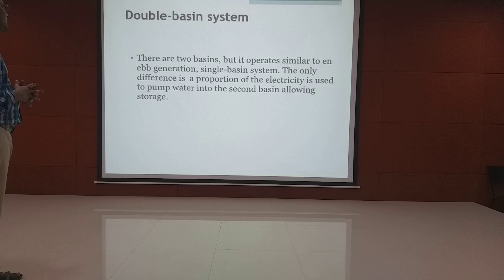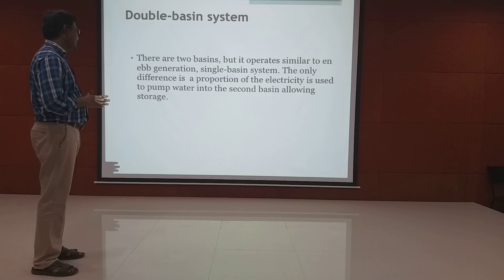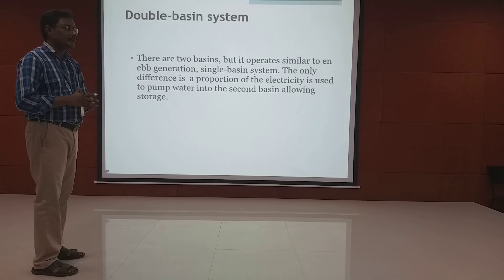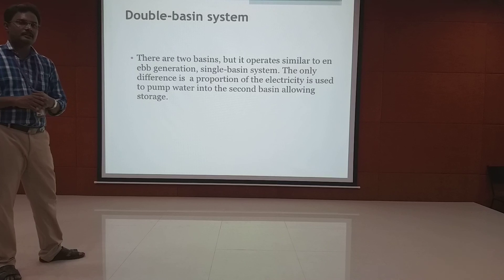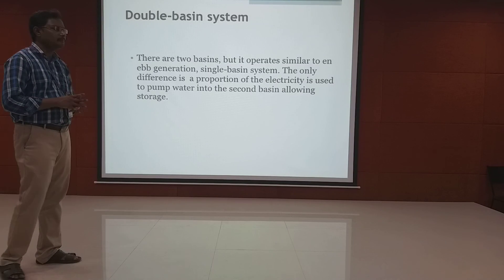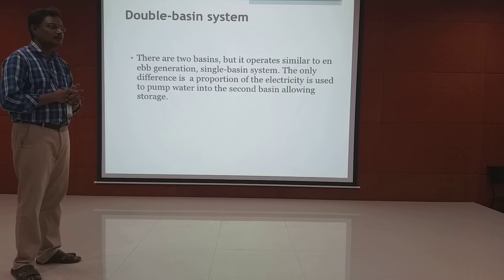In the double basin system, there are two basins operating similarly to EBB generation of the single basin system. The only difference is that a proportion of the electricity produced is used to pump water. We have seen the major types of power plants in this presentation — thermal, nuclear, solar, and tidal. Thank you for listening.